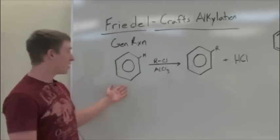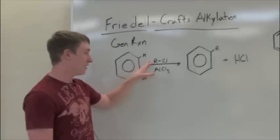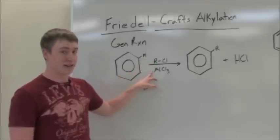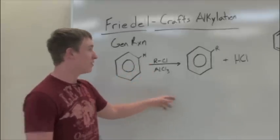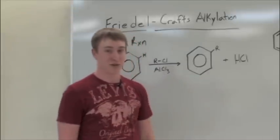In the general reaction, you'll take an aromatic compound and substitute this hydrogen with the R-group of an alkyl halide, and you'll react it with a Lewis acid, in this case aluminum trichloride, giving you a substituted aromatic ring with a byproduct of hydrogen chloride.